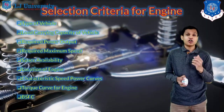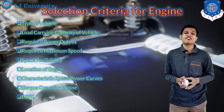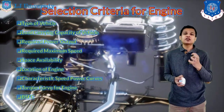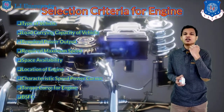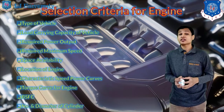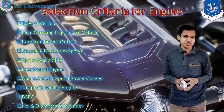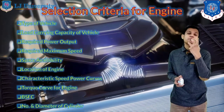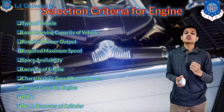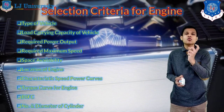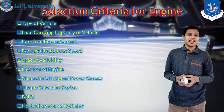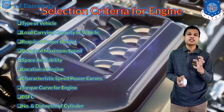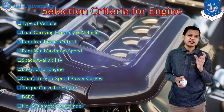The BSFC — brake specific fuel consumption — is an important factor for engine selection, which will eventually decide the average of the vehicle. For manual transmission vehicles the average will always be higher compared to automatic transmission vehicles that work on CVT. The last thing is the number and diameter of cylinders — how many cylinders will be used, decided based on required power, and the bore diameter, which is limited by the problem of knocking in petrol engines.